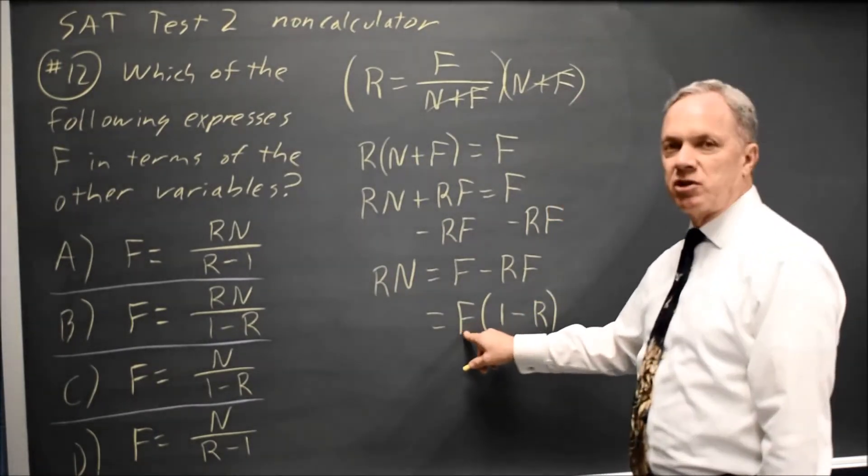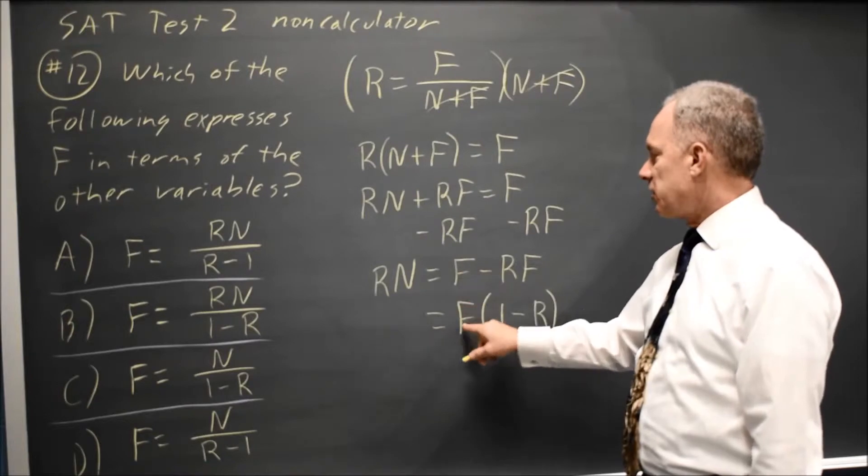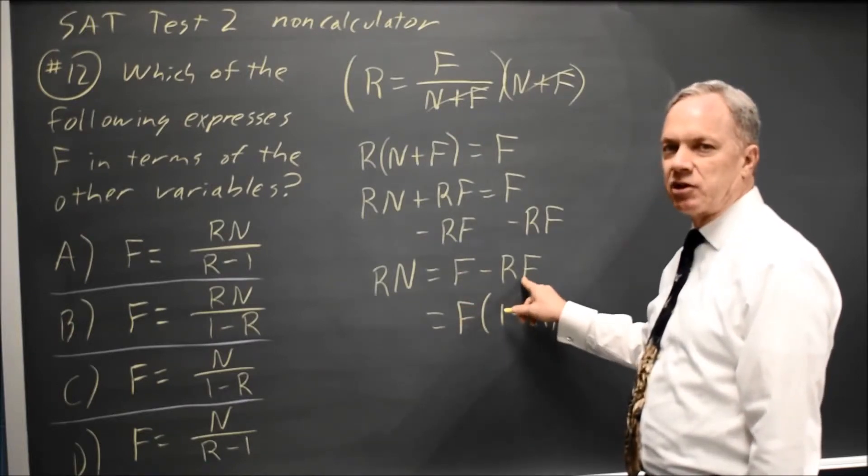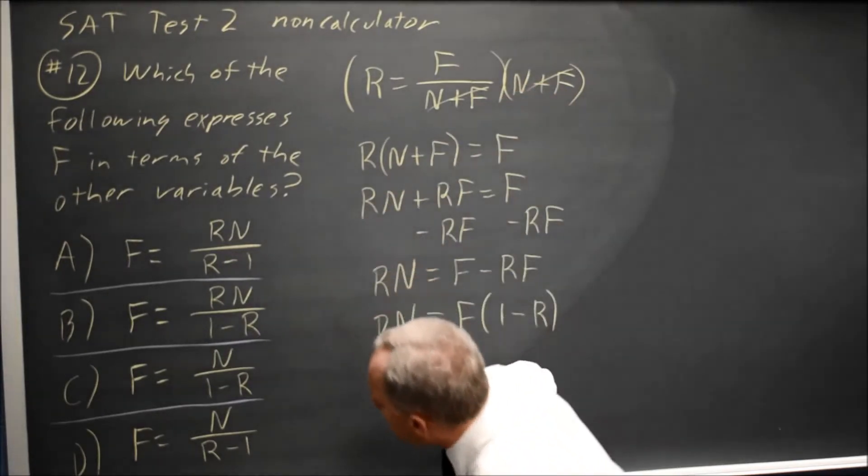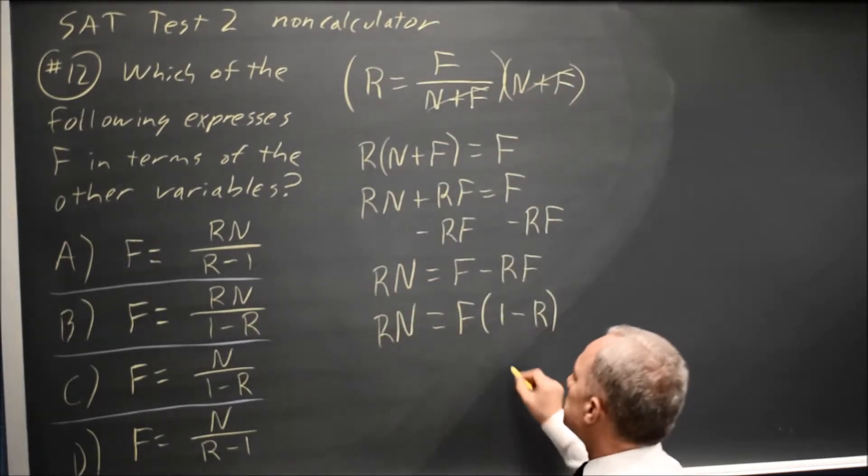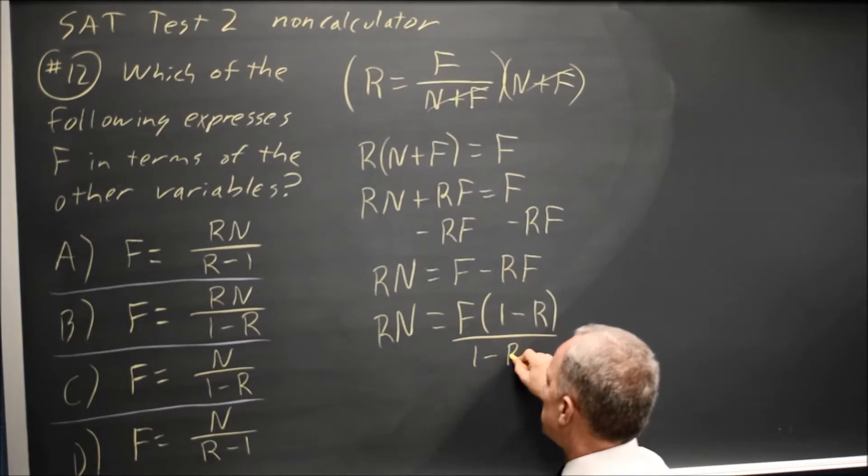I can check that by distributing. f times 1 is f, f times negative r is negative rf, so I did that correctly, and that's equal to rn on the left still. I want f by itself, so I'm going to divide both sides by 1 minus r.